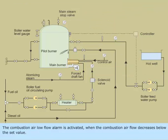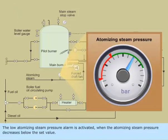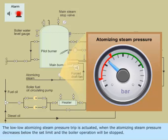The Combustion Air Low Flow Alarm is activated when the combustion air flow decreases below the set value. The Low Atomizing Steam Pressure Alarm is activated when the atomizing steam pressure decreases below the set value. The Low Low Atomizing Steam Pressure Trip is activated when the atomizing steam pressure decreases below the set limit and the boiler operation will be stopped.